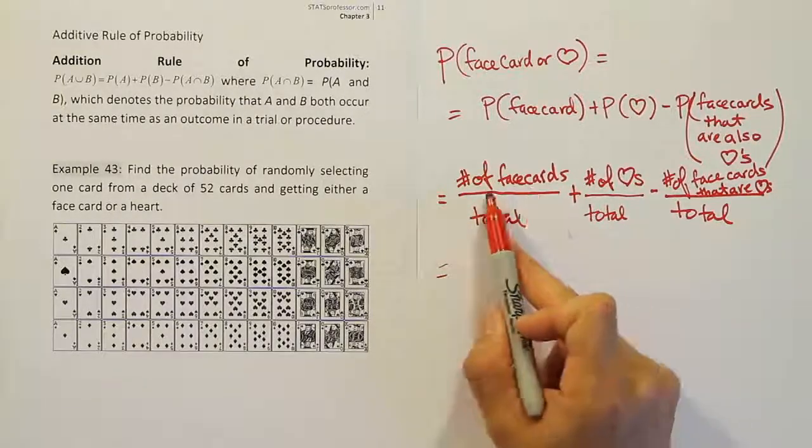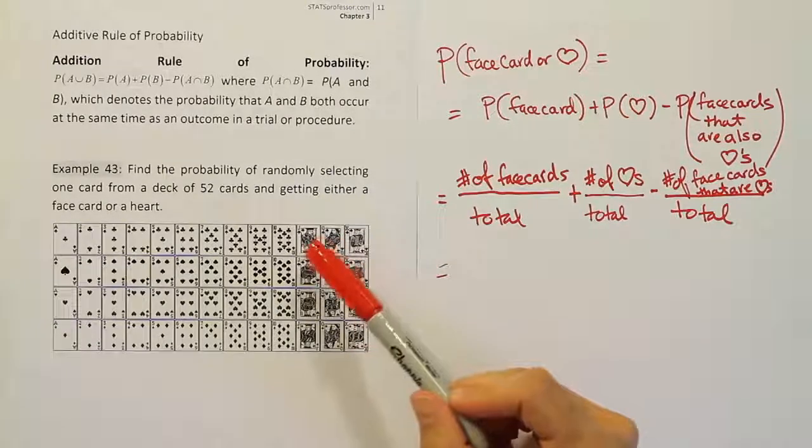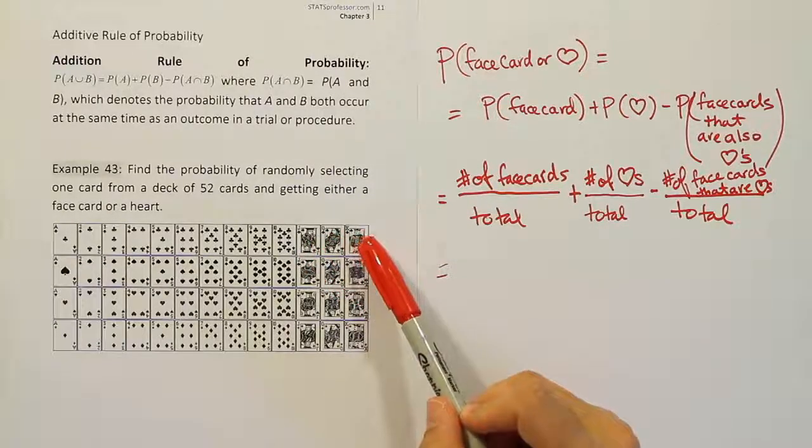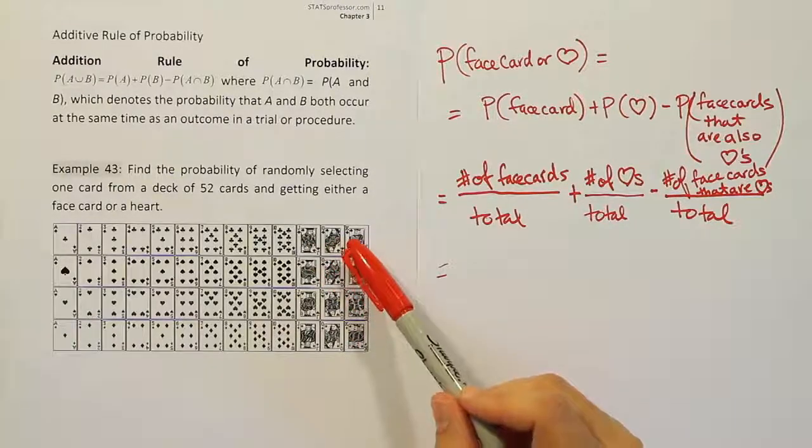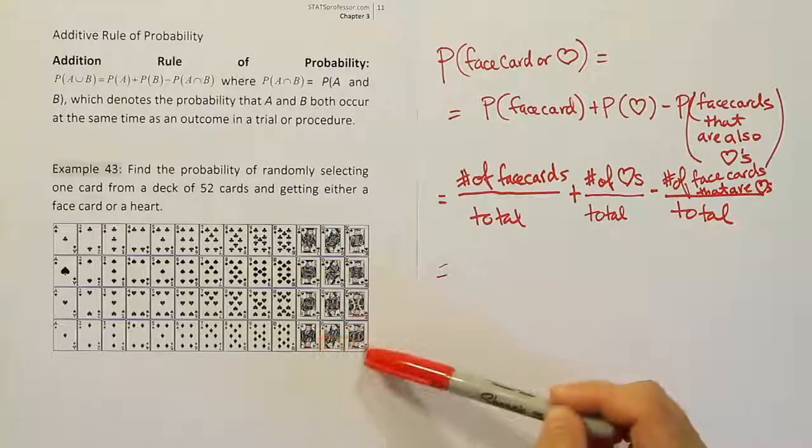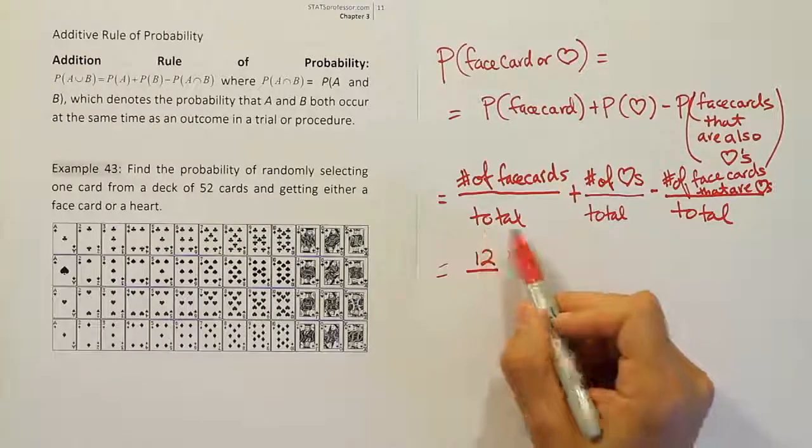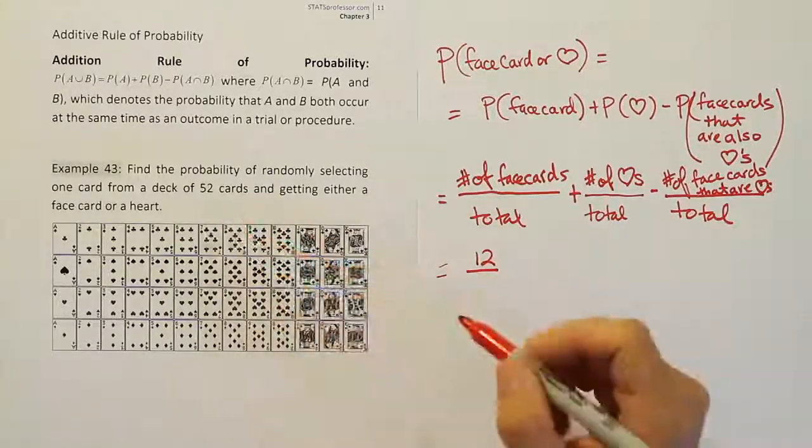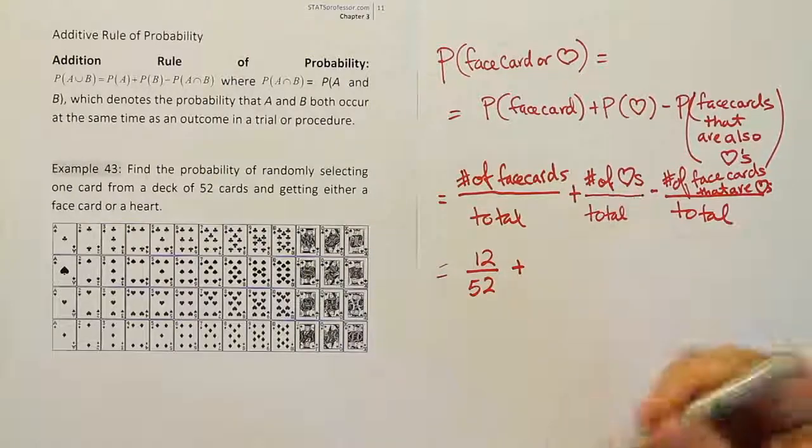So how many cards here are face cards? Well remember that face cards mean they literally have a little picture with a face on them. So in this case, the face cards for us are going to be Jacks, Queens, and Kings. And it looks like there are 3, 6, 9, 12 of those out of the deck. 12 cards that have a face on them. Over the total number of cards, well it says there are 52 cards. Plus, the number of hearts.